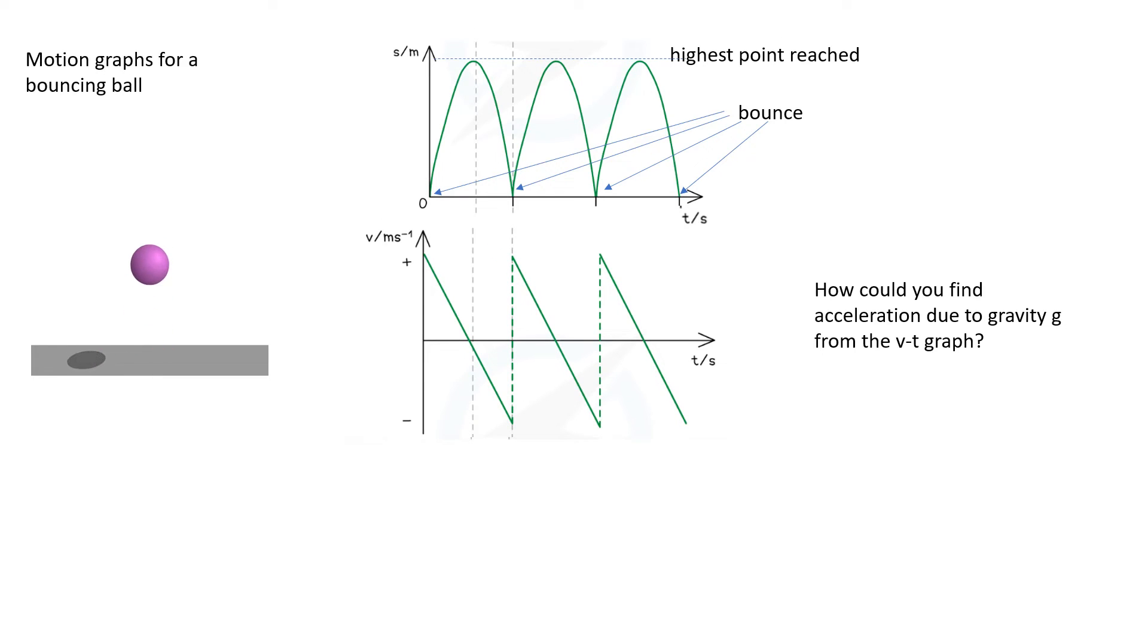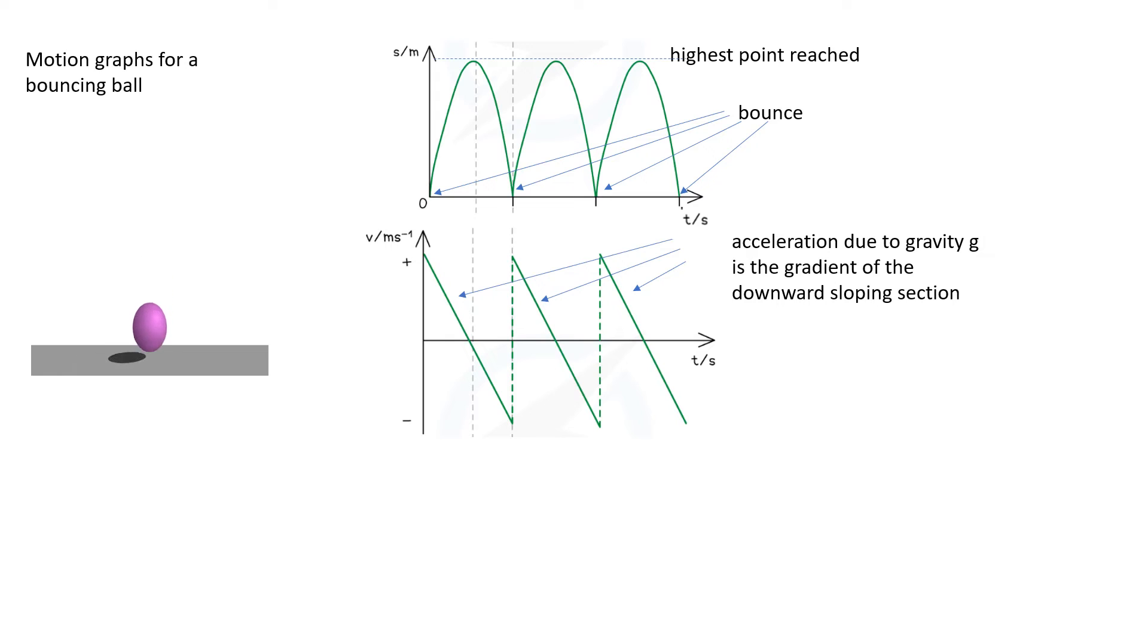Question: How could you find acceleration due to gravity g from the velocity time graph? We'd be looking to find the gradient of the section of the graph where the ball is in flight, so not where it's in contact with the ground. We're looking to find the gradient of this line here, not the dashed line because that's where it's in contact with the ground.